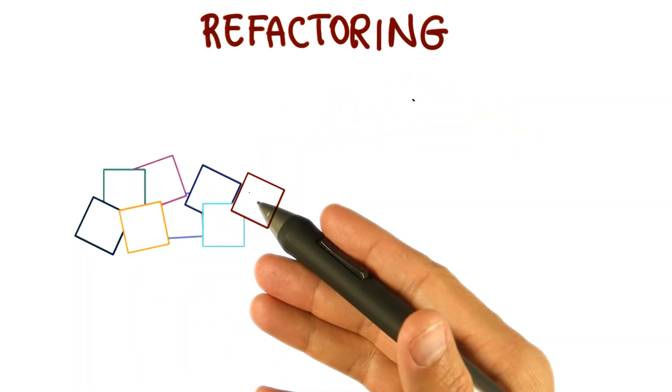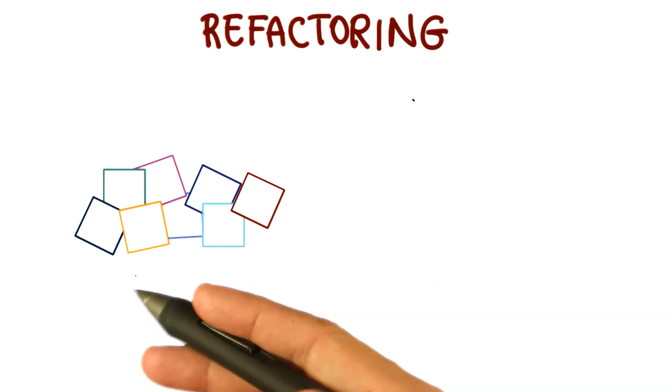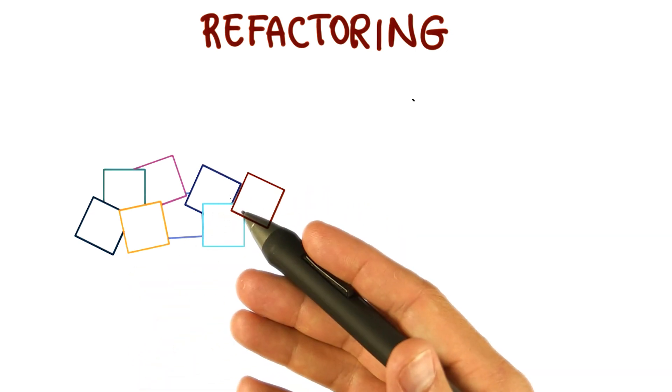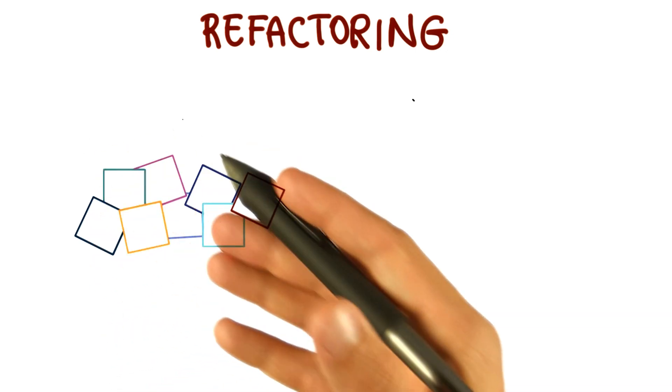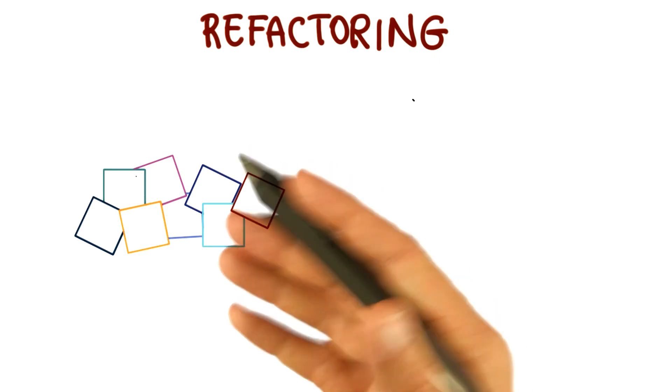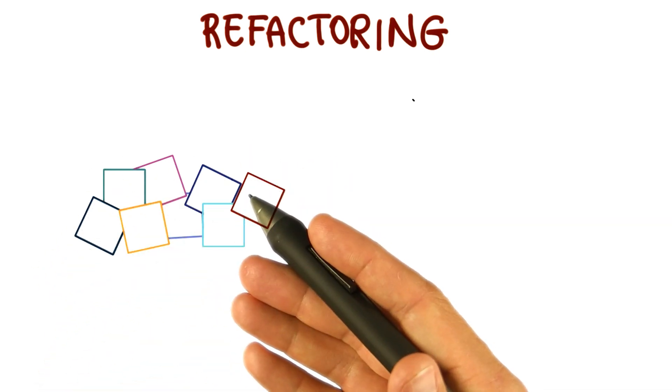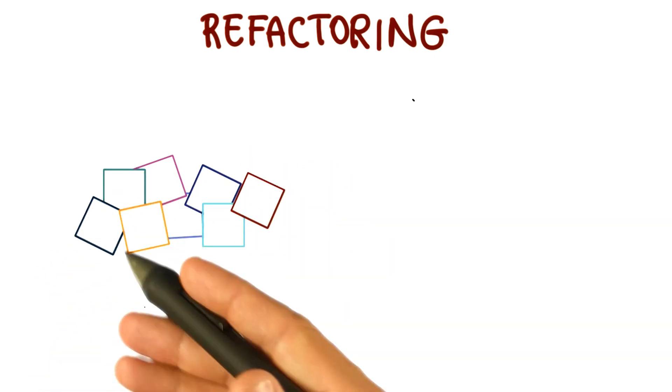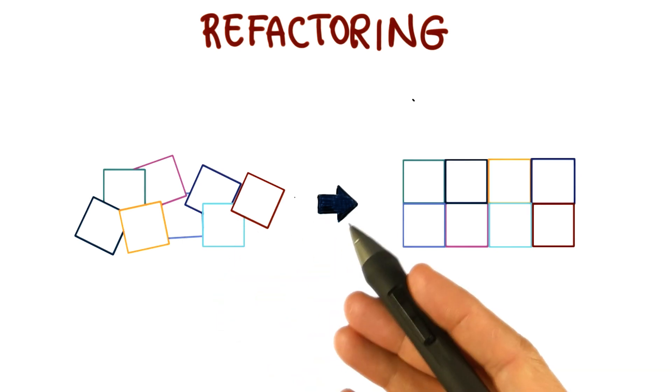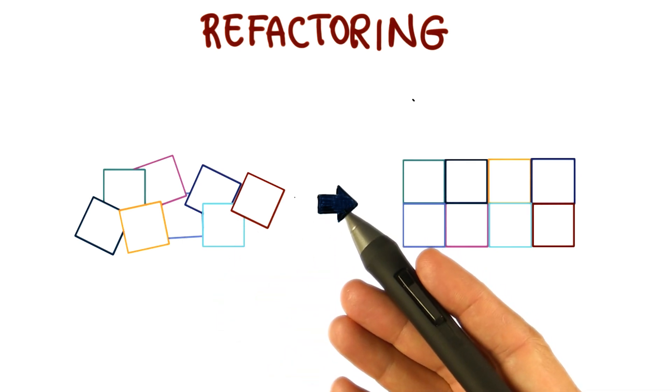It means to take a piece of code whose design might be suboptimal because, for example, we evolved it, we didn't take into account from the beginning some of the features that had to be added later, probably because we didn't even know about this feature because the requirements evolved. So we're going to take this piece of code and restructure it so that it becomes simple and maintainable.